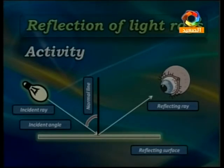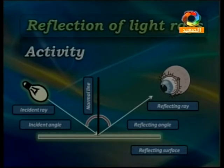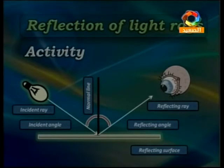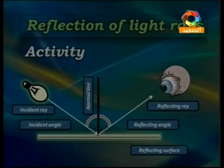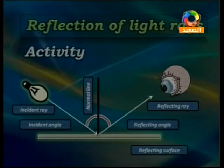There is an angle between the incident light ray and the normal line — this is the angle of incidence. There is another angle between the reflected ray and the normal line — this is the angle of reflection. This activity showing the reflection of light rays is very important for you to study well.